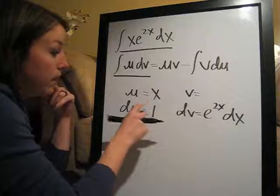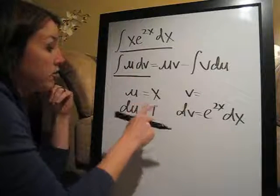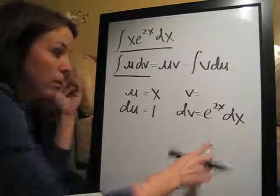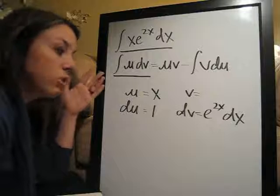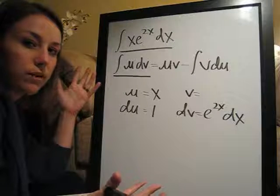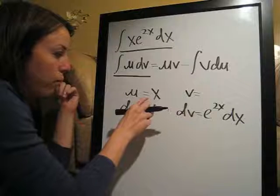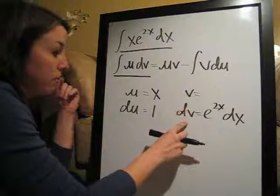Versus if we had made e to the 2x dx u, and then took the derivative of this, we would get 2e to the 2x, which really isn't simpler at all. So that's how we know what u should be and what dv should be.